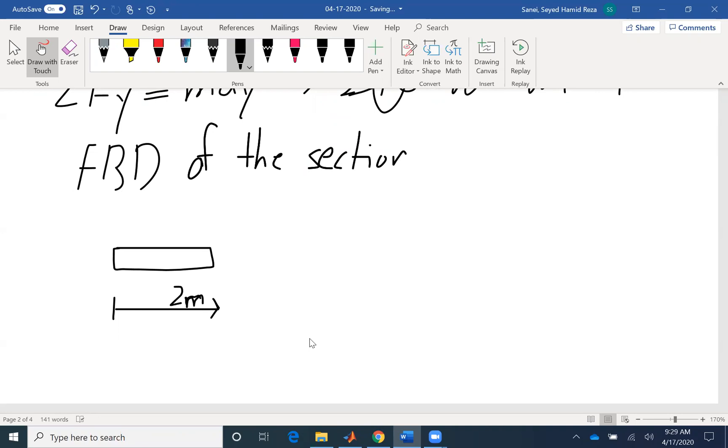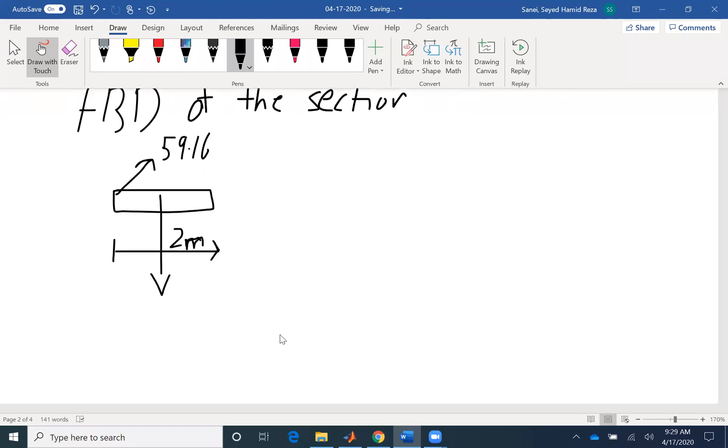I know the forces acting is the tension that I have. I found a value to be 59.16 kilonewtons. Then I have the weight. The weight, you need to be careful now because we are using a section of the beam. So we have to apply only the weight that that section has, which is half of that. So if the total is 8,000, this one is only 4,000. And it's acting in the middle of the section. So if the whole thing is 2 meters, it's acting at 1 meter.